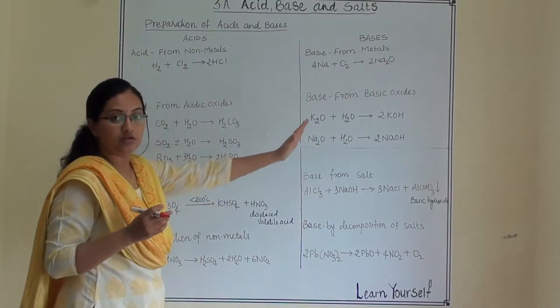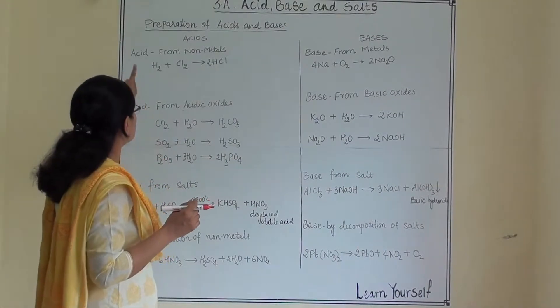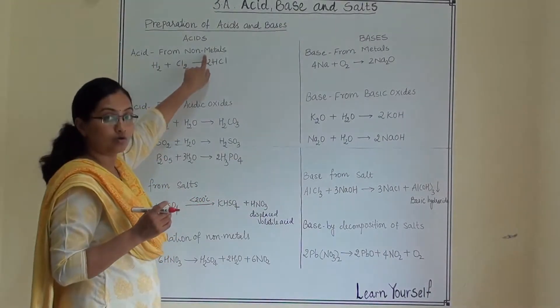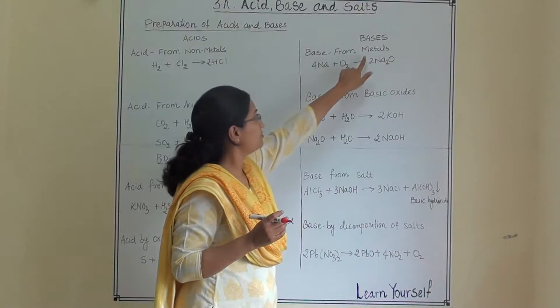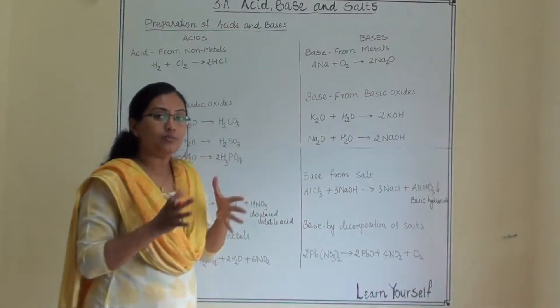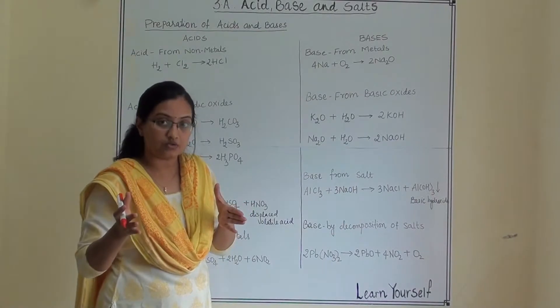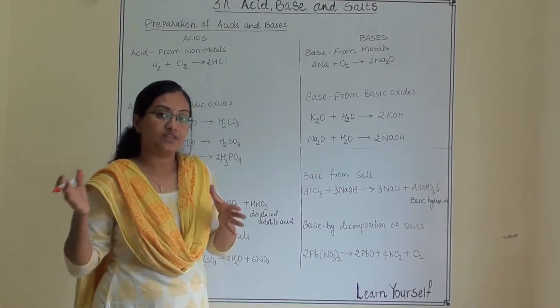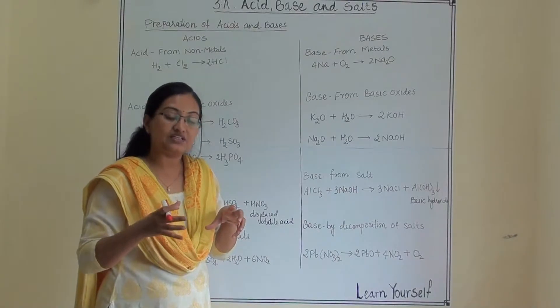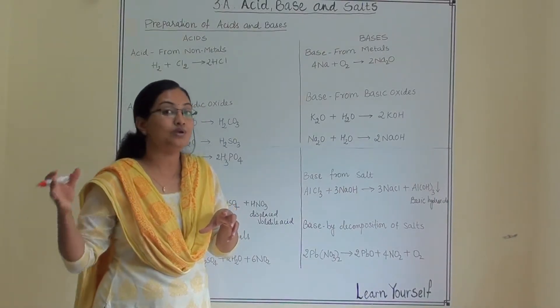So one by one we will take first acid from non-metals and base from metals. Non-metal when react with oxide it gives non-metal oxide and they are acidic. Metal when react with oxides it gives metal oxide and they are base.